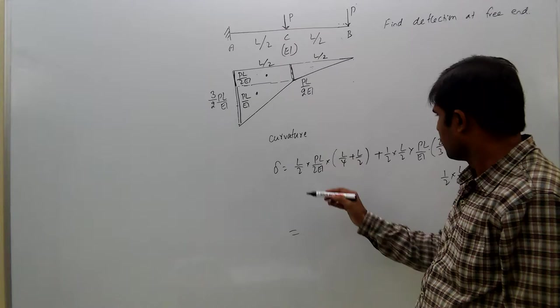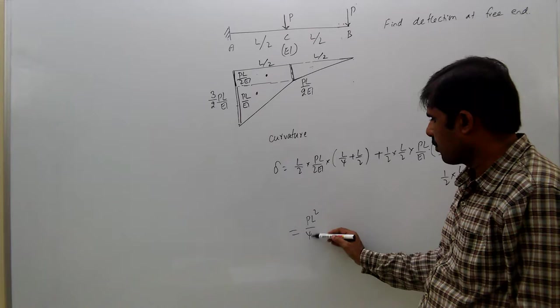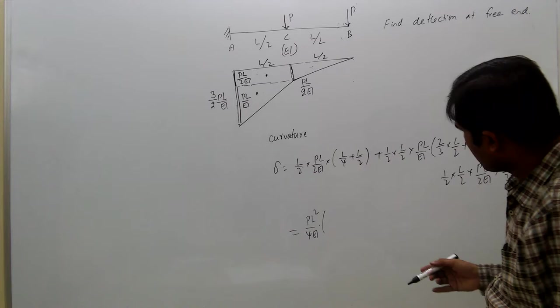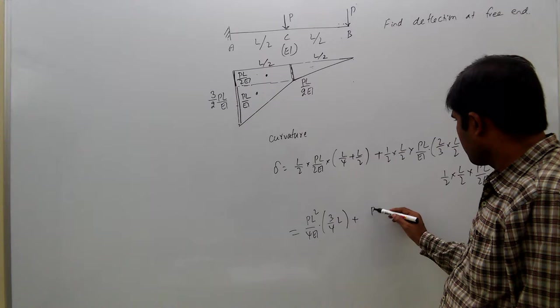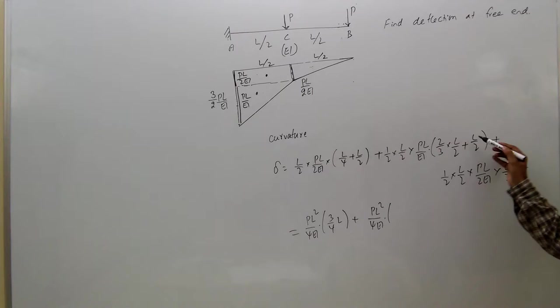That equals here PL²/4EI into L/4 plus L/2. LCM is 4, so 1 plus 2 equals 3/4 of L. Plus here PL²/4EI into, here two digits cancelled, L/3 plus L/2.